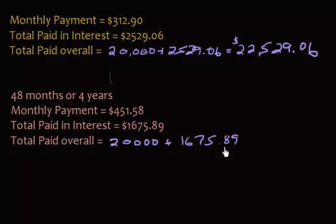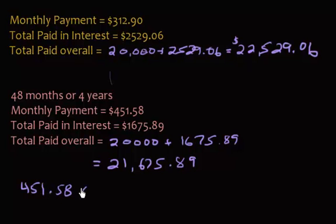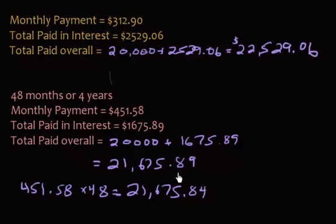The total paid overall on the four-year loan is twenty-one thousand six hundred and seventy-five dollars and eighty-nine cents. Another way to get this number is to multiply the four hundred fifty-one dollar fifty-eight cent payment by forty-eight payments. You'll get very close — the small difference is just due to rounding in the online calculator. So even though you have larger payments each month, overall you end up spending less. That's why when planning a car loan or mortgage, you have to take this into consideration — yes, larger payments, but overall you pay less.